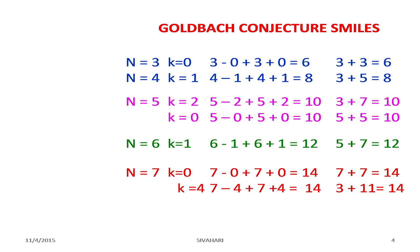Similarly, when n equals 5, we have two options. k equals 2 gives 5 minus 2 and 5 plus 2, that is 3 plus 7 equals 10, the next even number. Also, 5 plus 5 is also 10.